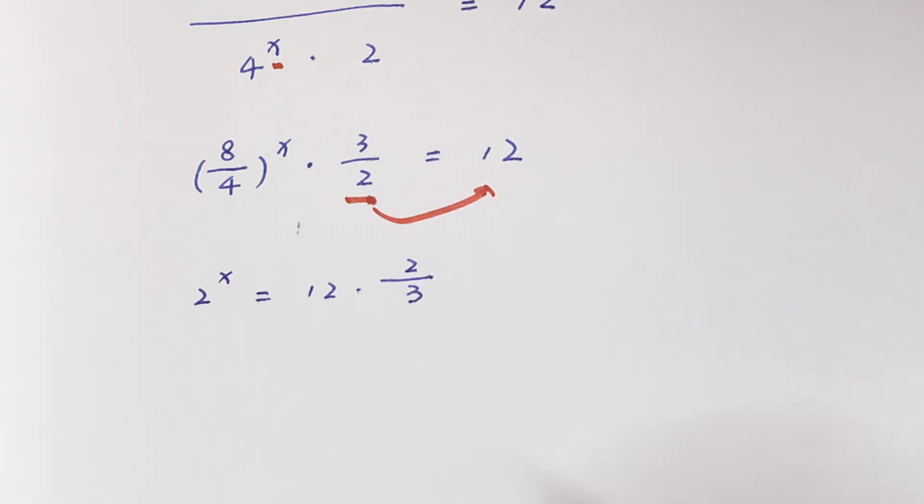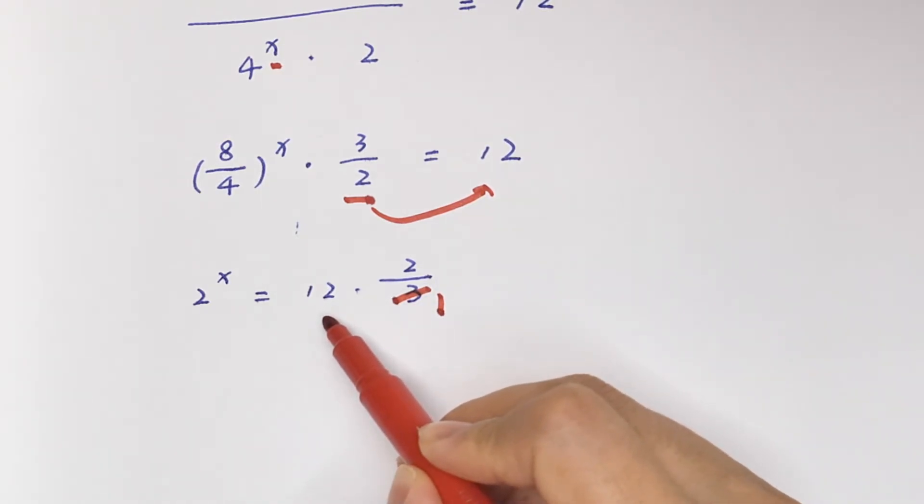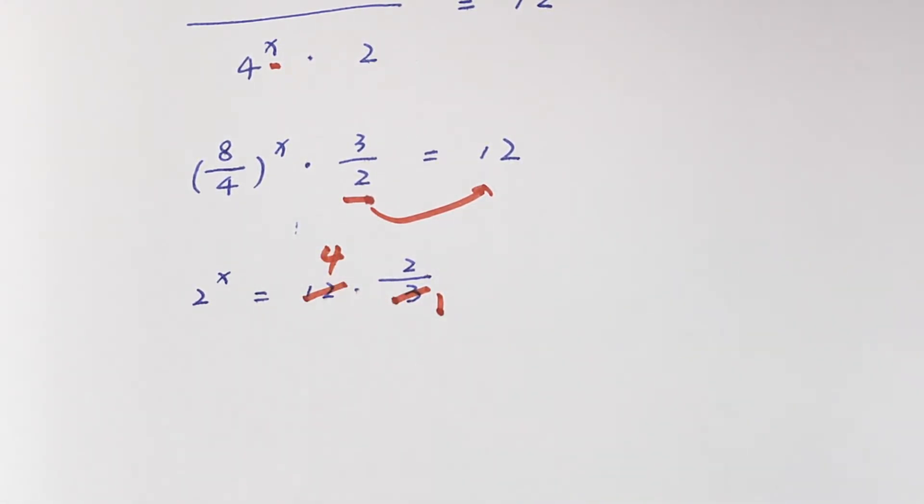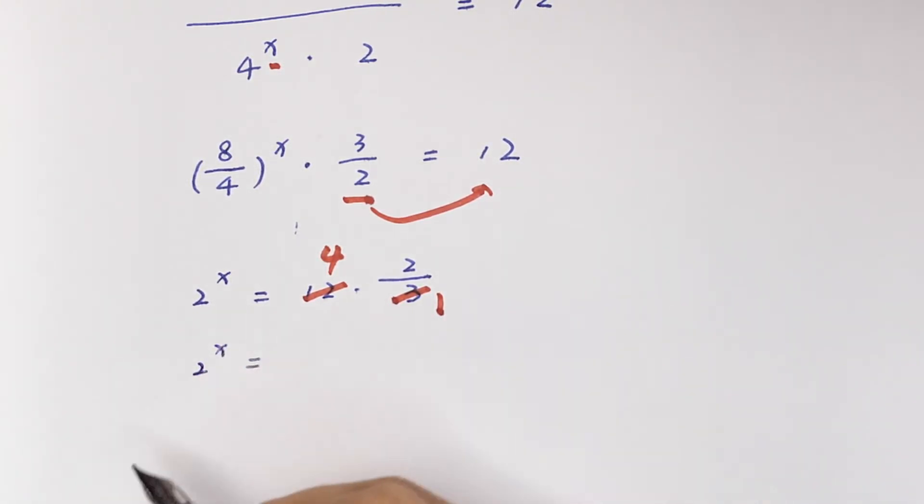To simplify, we divide 3 by 1 and 12 by 4, so 2^x is equal to 4 times 2 is 8.